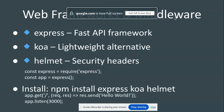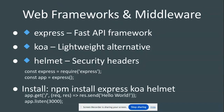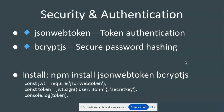Next, we have web frameworks and middleware. Express is the most important — a fast API framework. Koa is a lightweight alternative you can use. Helmet is used for security headers. I've used both Express and Koa, but Express has much more community support, so go with Express. For security headers, go with Helmet.